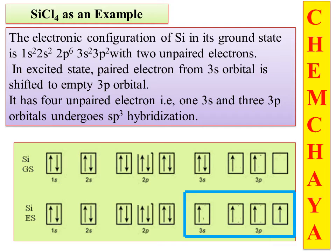In the central metal atom, there is silicon. The electronic configuration of silicon is: 1s2, 2s2, 2p6, 3s2, 3p2.